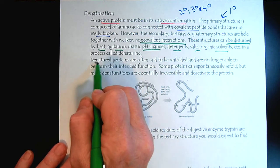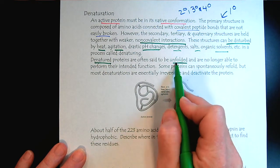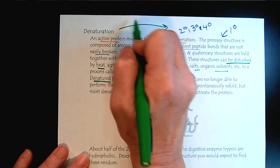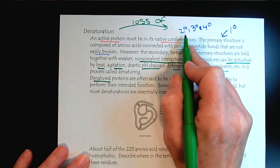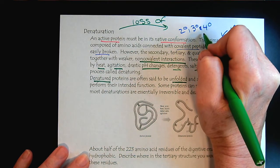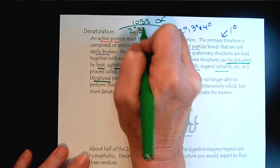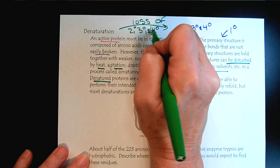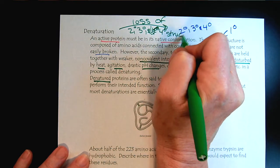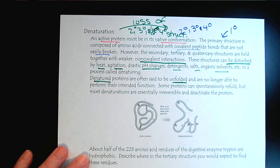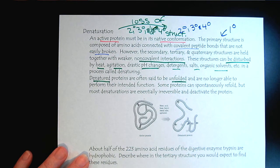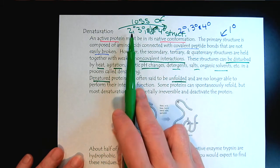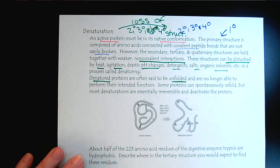And what these do is they cause the protein to denature. So what does that mean? That means that the protein becomes unfolded. Basically, denaturing is a loss of secondary, tertiary, and quaternary structure. Or and/or quaternary structure. So any time there's been a change in the environment of a protein that causes a loss of the quaternary, tertiary, or secondary structure, we say the protein has been denatured.